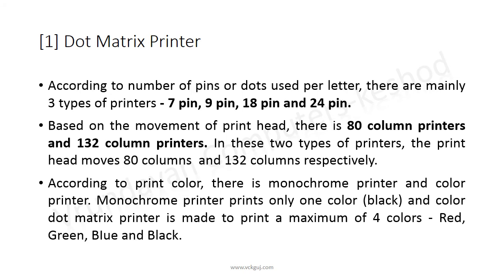A monochrome printer prints only one color — black. A color dot matrix printer can print a maximum of four colors: red, green, blue, and black.